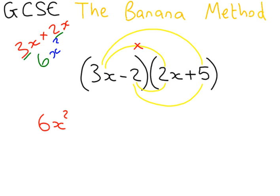The next one is 3x times 5, which is 5 lots of 3x, which is 15x. And we have a plus and a plus. So it's a plus. The next one is minus 2 times by 2x, which is 4x. But because of the minus and the plus, it becomes a negative. Because a minus times a plus is a negative.